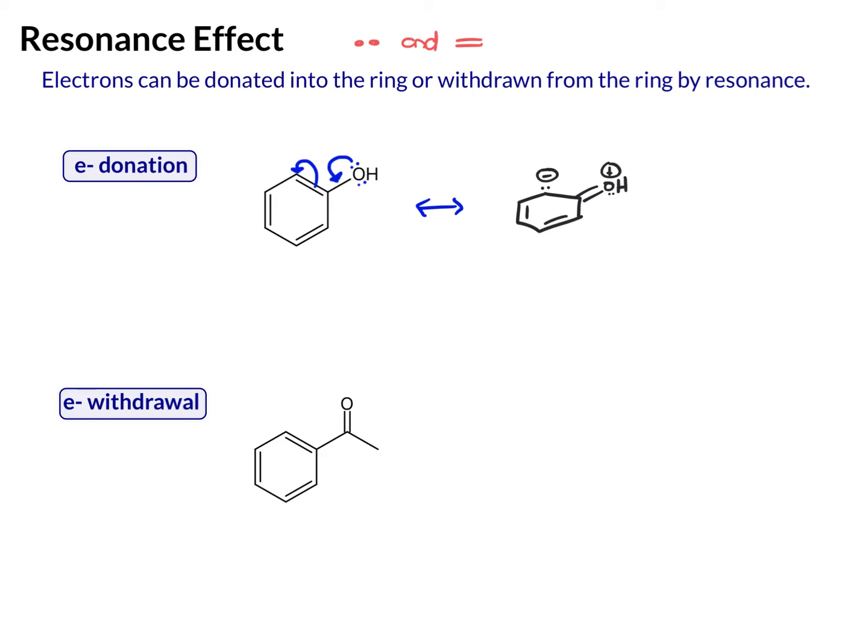So here's the other resonance structure, and you can see that electrons are being put on the ring. So here we push electron density onto the ring by resonance.